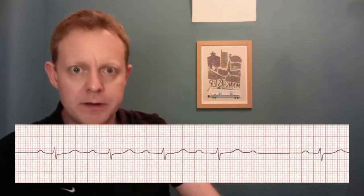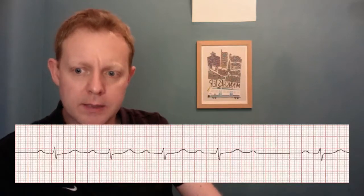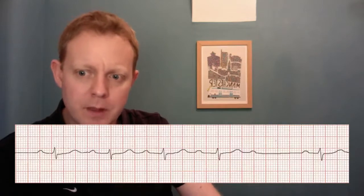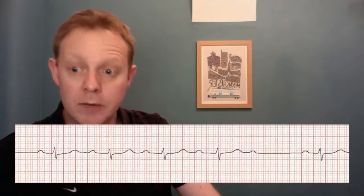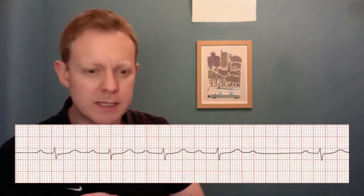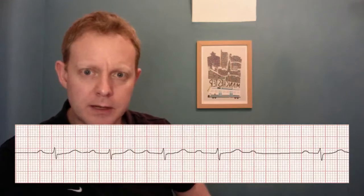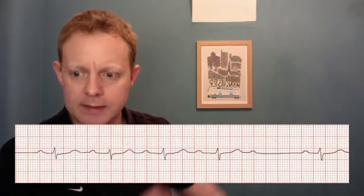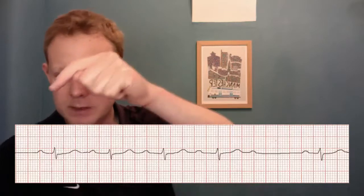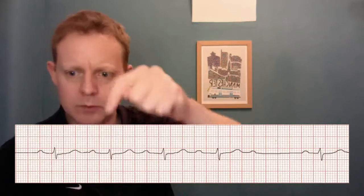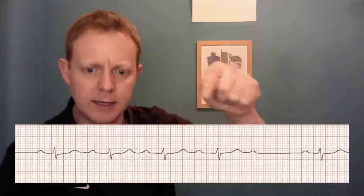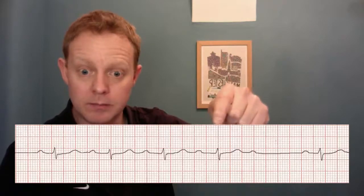So here's our first rhythm strip. Is there any electrical activity? Yes, there is. What's the ventricular rate? Well, it looks a bit slow, so it's bradycardic. Is the QRS rate regular or irregular? Let's have a little look. We start across here and we seem to be plodding along nice and regularly — it's a regular rhythm.